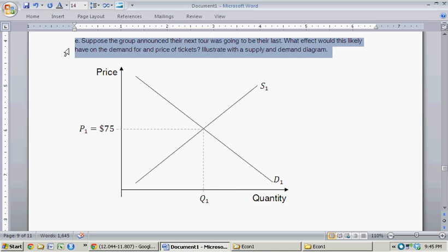Okay, and now, lastly, part E. Suppose the group announced their next tour was going to be their last tour. What effect would this likely have on the demand for and prices of tickets? Illustrate with a supply and demand diagram.